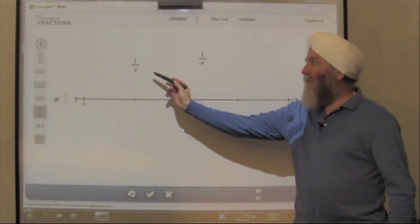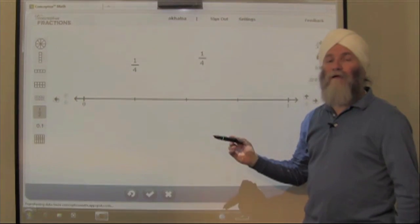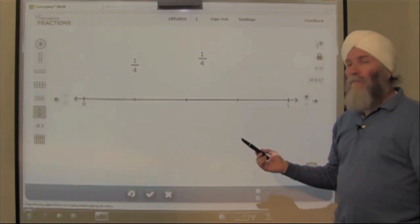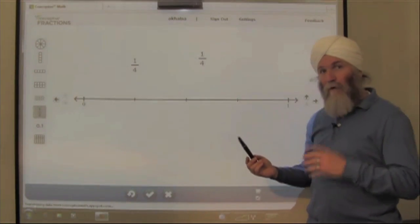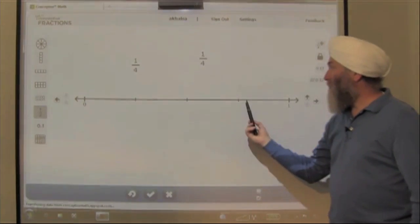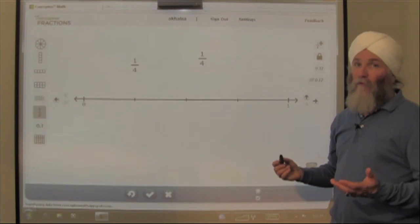Here we have the fraction 1/4 and it's displayed two times. We have a number line which represents the distance between 0 and 1, and it's divided into four equal parts: 1, 2, 3, 4. Those are fourths.